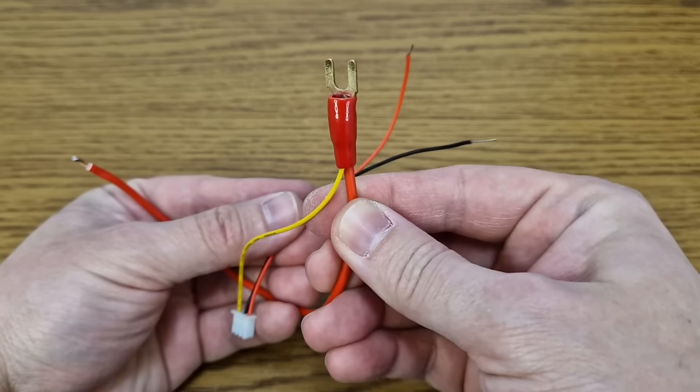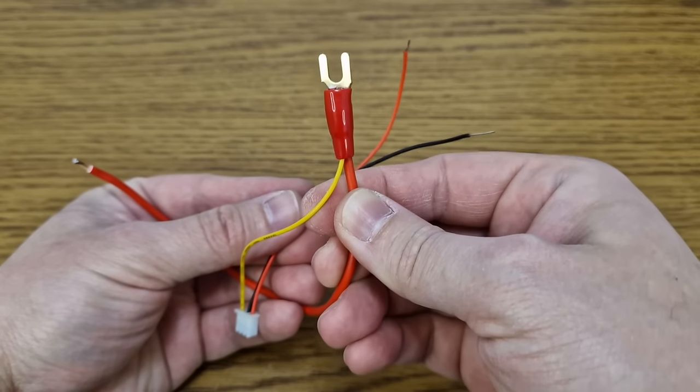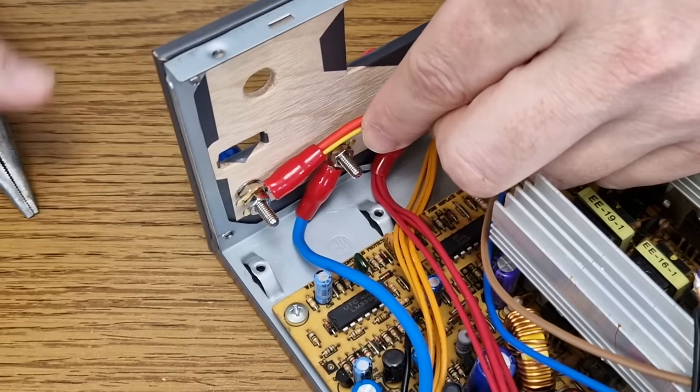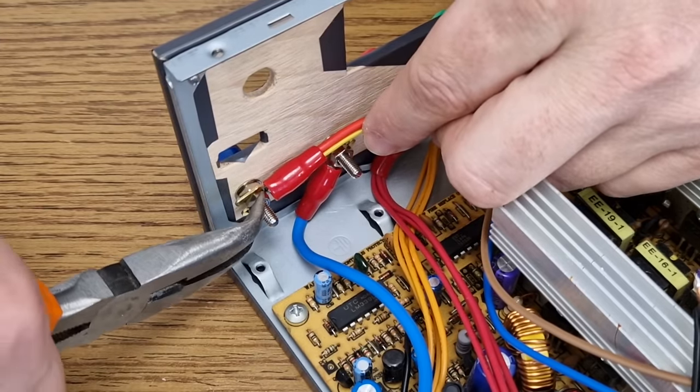Yes, thank you. The sense wire of the digital voltmeter will be connected to the positive output of the converter, to measure the variable voltage directly on the binding post.